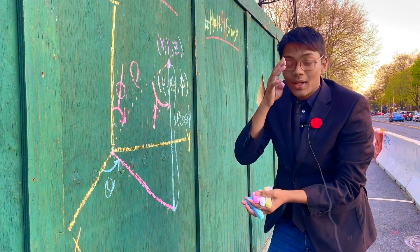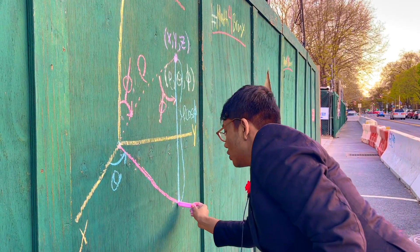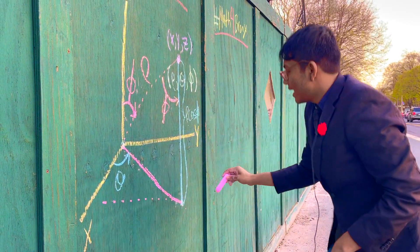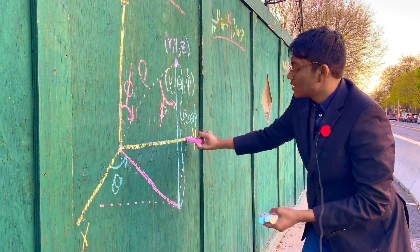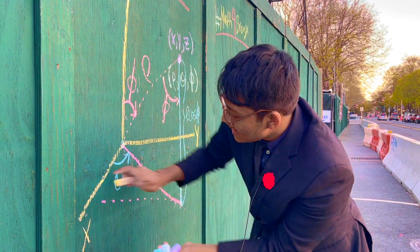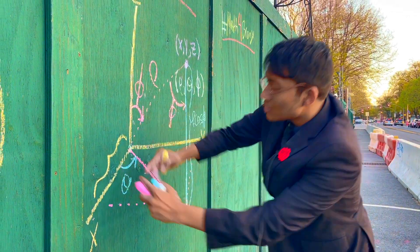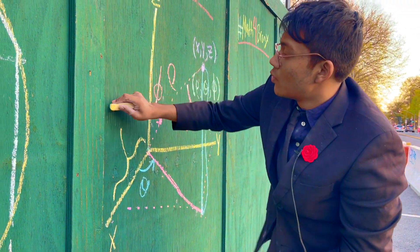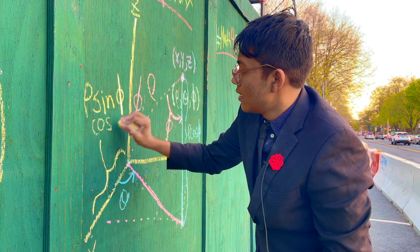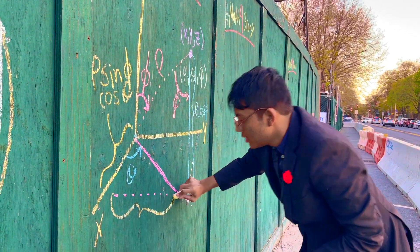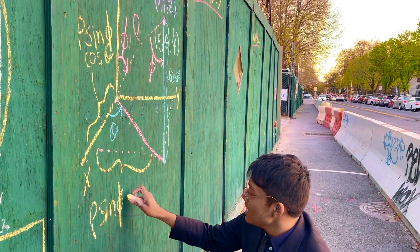And what about x and y? Well, that's pretty easy too. All we have to do now is project to the x-axis and to the y-axis. The x-axis length is going to be rho sine phi cosine theta. And likewise for y, we're going to have, as you might expect, rho sine phi sine theta.